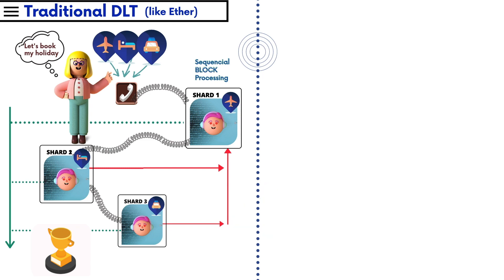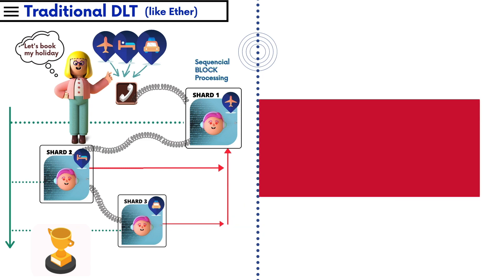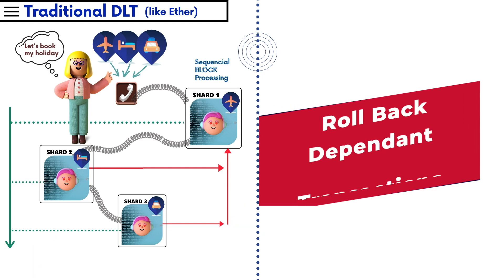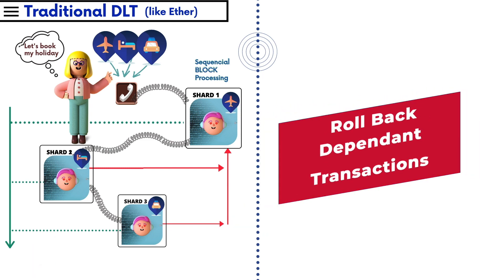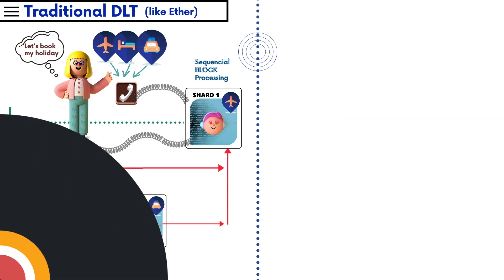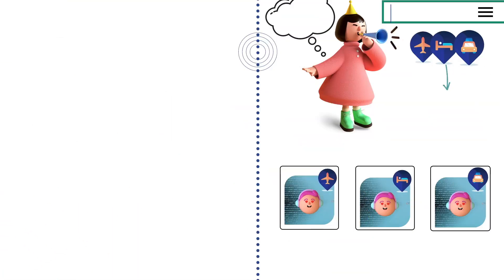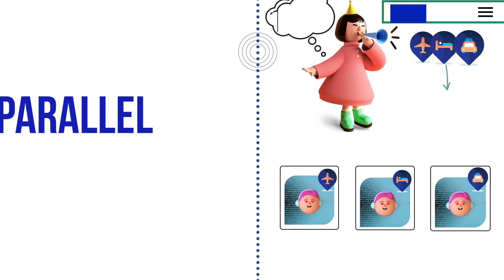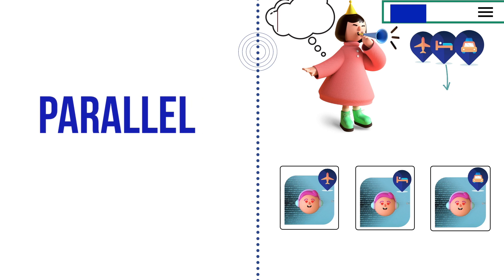If one fails, all the previous successful operations should be rolled back. That means even when the buyer receives some confirmation, there was no certainty that your transaction would finally go through. Radix, on the other hand, is designed to deliver true finality.